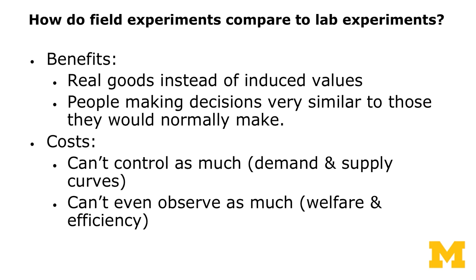How do field experiments compare to lab experiments? The benefits of field experiments include using real goods instead of induced values, and people make decisions similar to those they would normally make — it's a familiar scenario, and decisions are more representative of their daily decisions. The cost of field experiments is that you can't control as much — you cannot control demand and supply curves, and you can't observe as much either. In a lab auction, we can calculate efficiency, whereas in a field experiment it's difficult because you don't know people's maximum willingness to pay for an object.